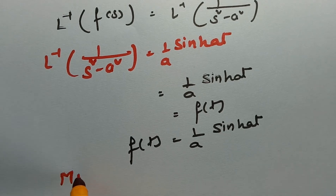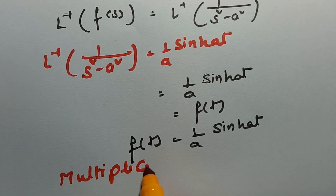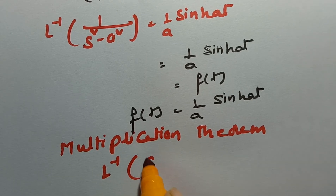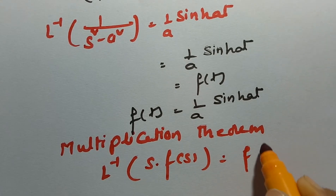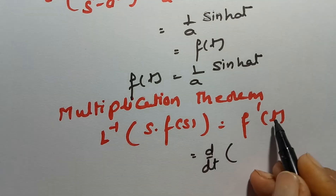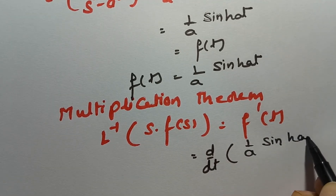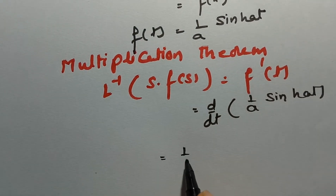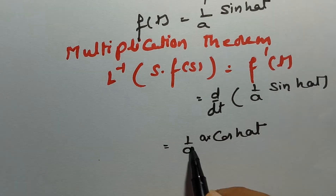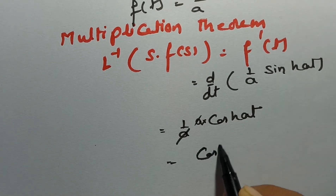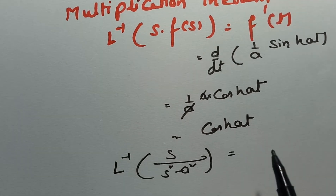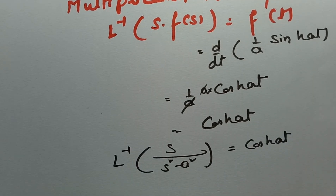Now applying the multiplication theorem: inverse Laplace transform of s·F(s) = f′(t), so I need to compute d/dt of (1/a)·sinh(at). Since 1/a is a constant, the derivative of sinh(at) is cosh(at) times a. The a's cancel, giving the answer: cosh(at). So the inverse Laplace transform of s/(s²−a²) = cosh(at).